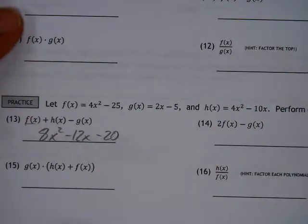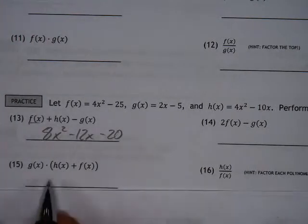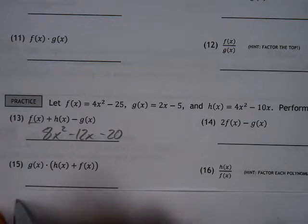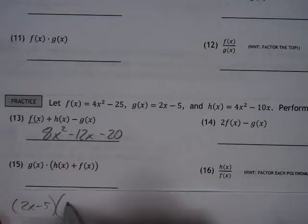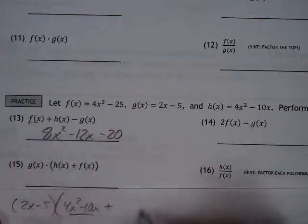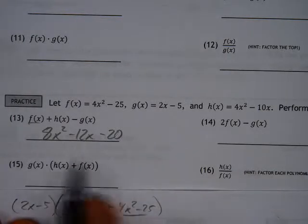And then any of the other ones, for example, on 15, you're saying g of x times the product of that times the sum of these. So again, with g of x, if you do your 2x minus 5 and then combine these like terms, so your 4x squared minus 10x plus your f of x, which is 4x squared minus 25.